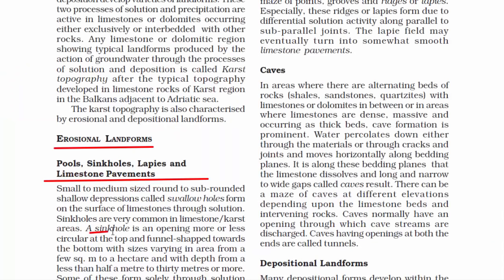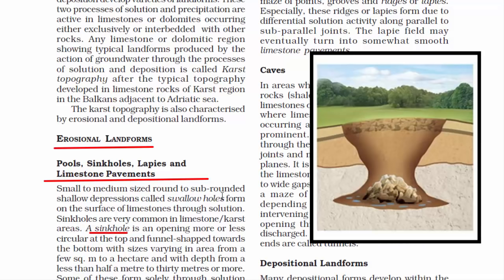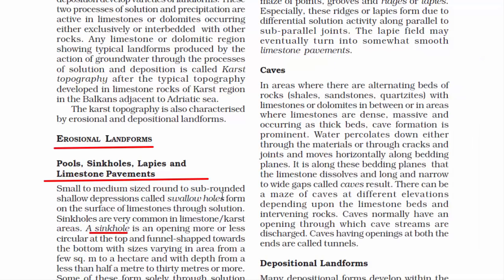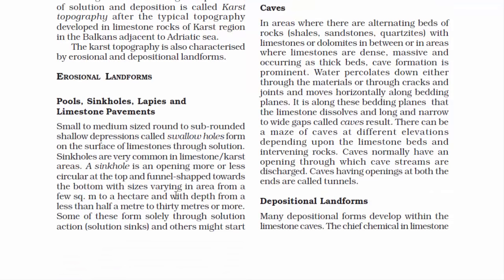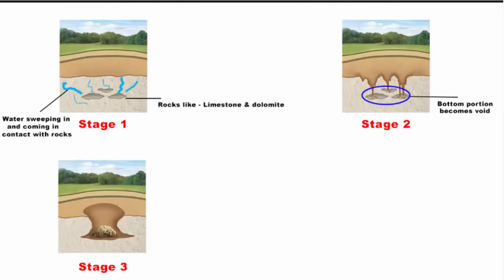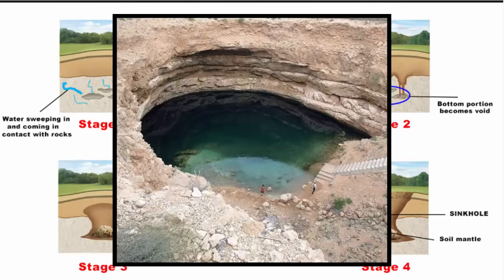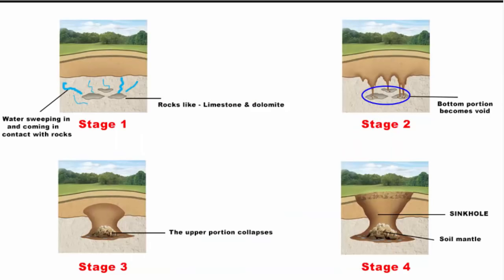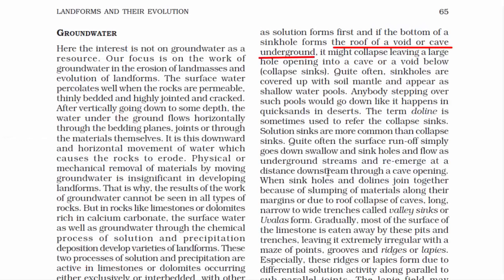The next term is sinkholes. They are an opening more or less circular at the top and funnel-shaped towards the bottom, with sizes varying in area from a few square kilometers to a hectare, and with a depth of less than half a meter to 30 meters or more. Due to the bottom portion being void, the upper surface collapses forming this kind of sinkhole. Sinkholes are covered with soil mantle and appear as shallow water pools. The term doline is sometimes used to refer to collapsed sinks.